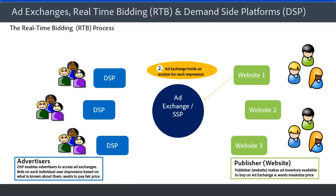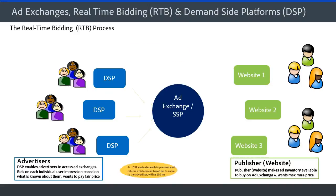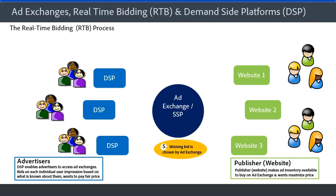The ad exchange holds an auction for each individual user impression. They send a bid request to each DSP to bid on that impression. Today, a million bid requests can go out in a second — this is happening very fast and there's a lot of data being sent around. The DSP evaluates each impression and returns a bid amount based on its value to the advertiser. This happens in 100 milliseconds or less. The winning bid is chosen by the ad exchange and an ad is shown on the publisher website.